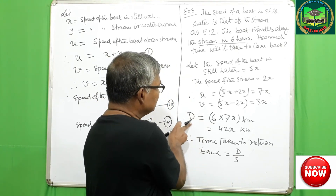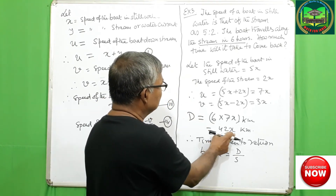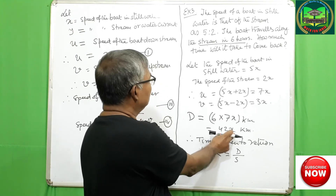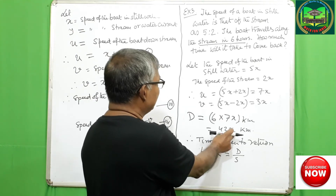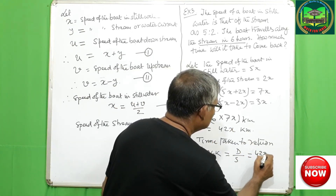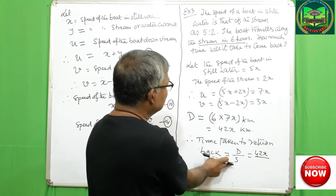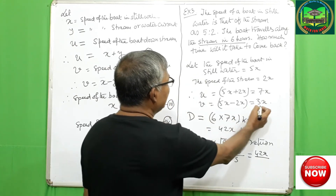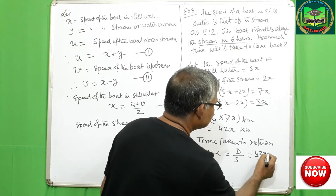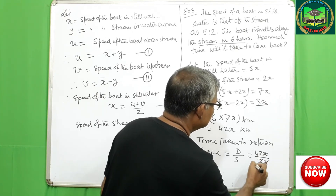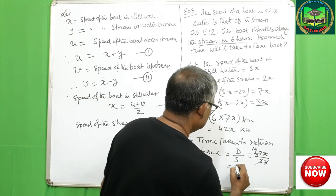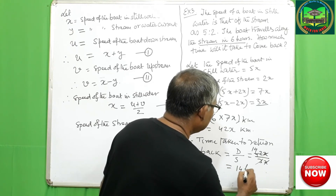To return, the boat must travel upstream. The time taken to return equals distance by speed, where the distance is 42x and the upstream speed is 3x. So time equals 42x by 3x — x cancels — giving 14. Therefore the time taken to return is 14 hours.